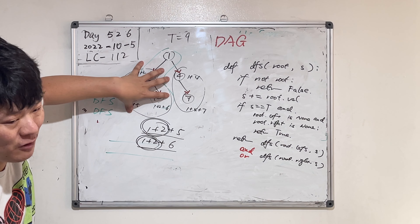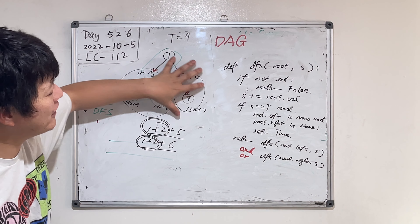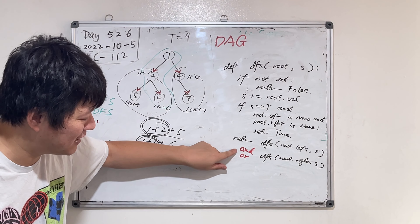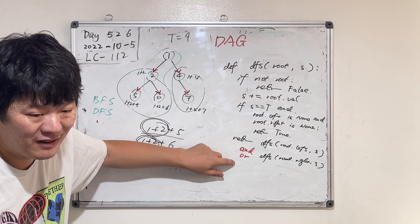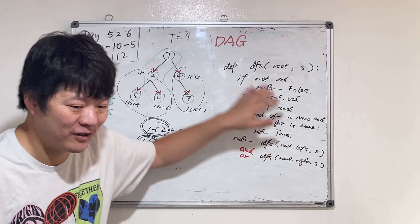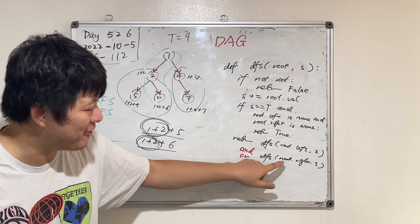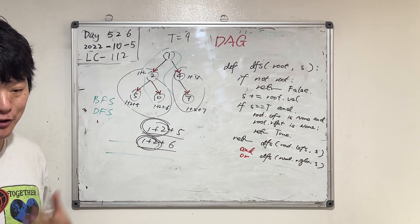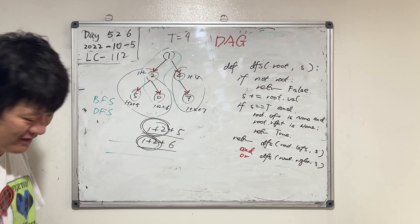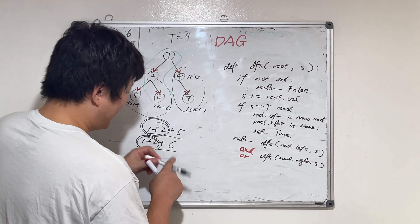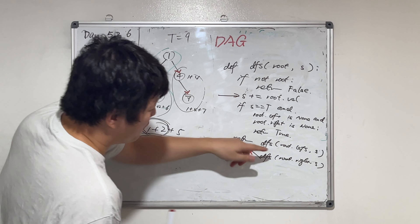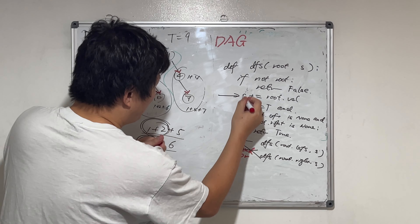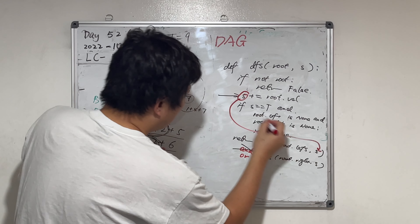OR — obviously! We check if there's a path on the left tree or if there's a path on the right tree. We've accumulated the sum and we pass it down — to the left tree and the right tree — we just have to check if there's a path on the left tree or on the right tree, passing down the accumulation.